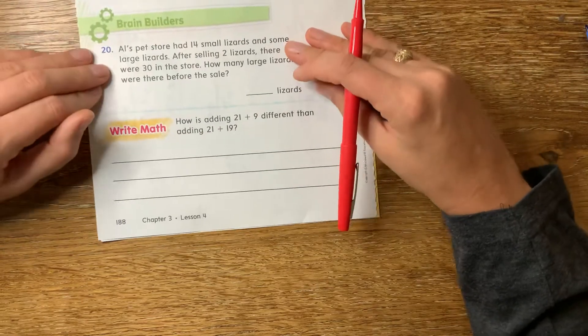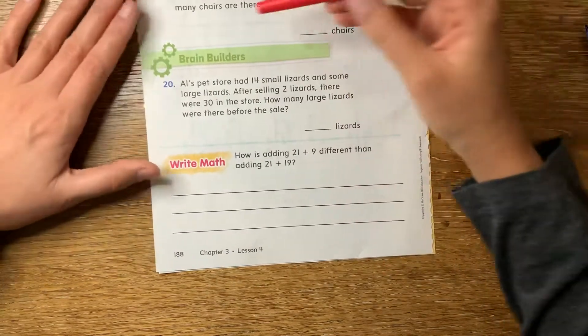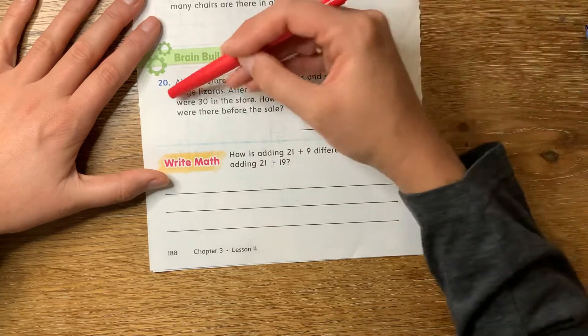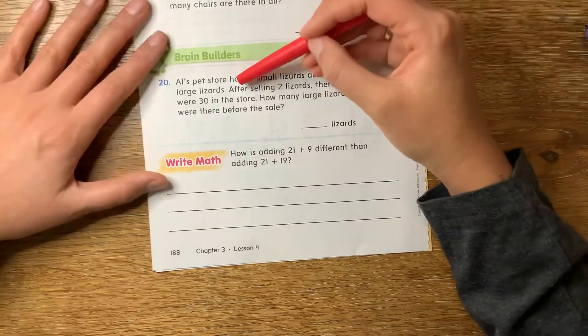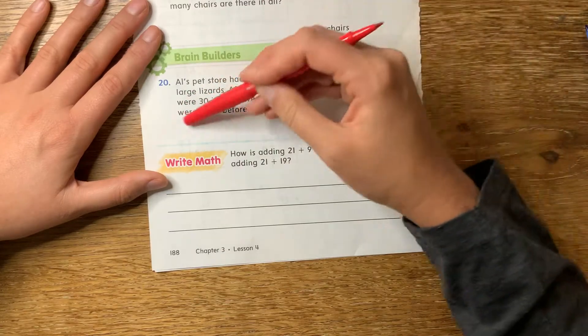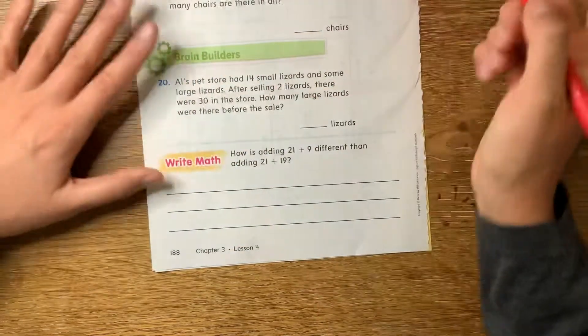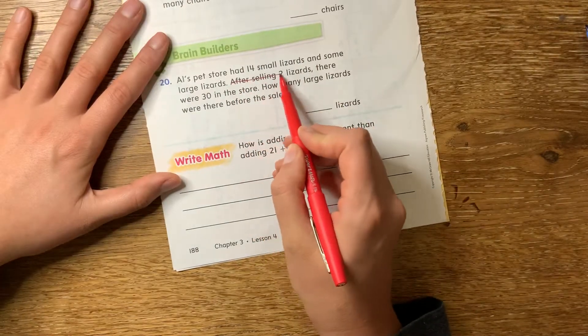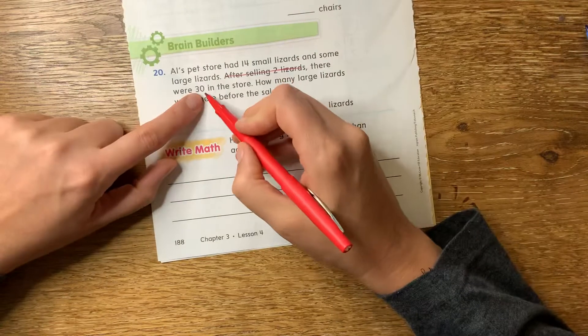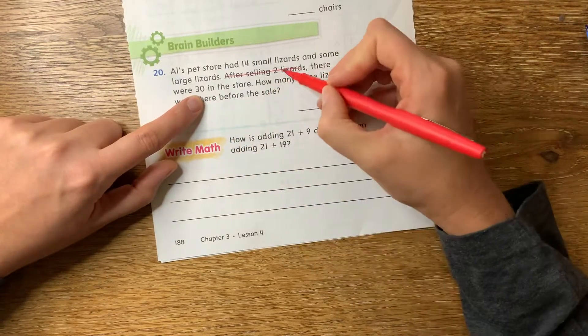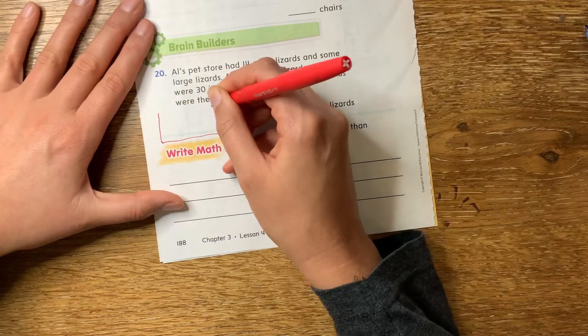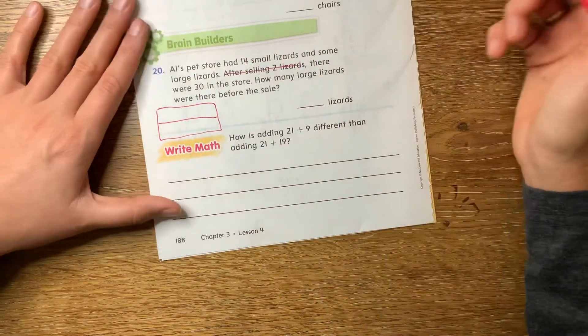Let's talk about the brain builder for a second. Cause I know it might be a little bit tricky. It says Al's pet store had 14 small lizards and some large lizards. I don't know how many after selling two lizards, there were 30 in the store. How many large lizards were there before the sale? So before the sale, I don't need to know after selling, right? So I don't really need to know that except to know that there were 30 after the sale, right? So before the sale, there were 32 in all. So in my part, part, whole box. So I guess technically we did need that information. Okay.